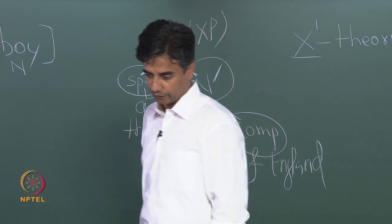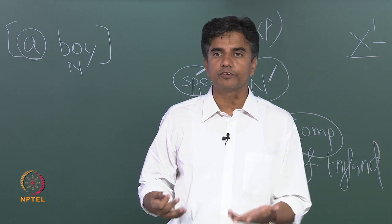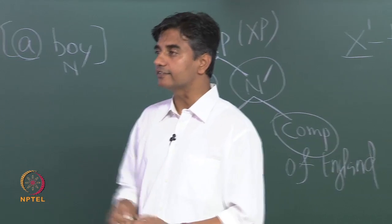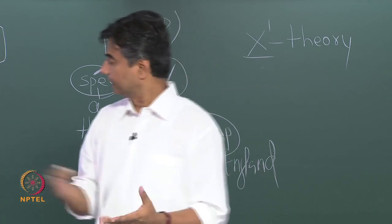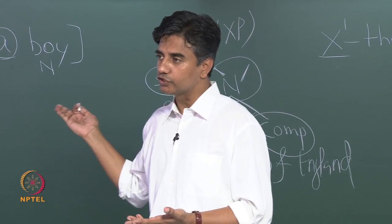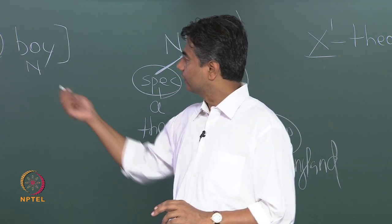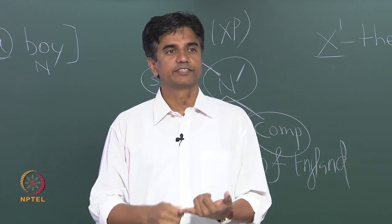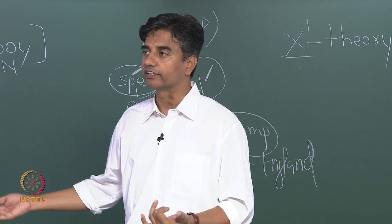In the last example, 'student of physics with long hair' — we have both in this phrase. There is no verb in this whole phrase, therefore it is still a noun phrase, less than a sentence. This is still a noun phrase where we have both a complement and an adjunct: 'of physics' is a complement and 'with long hair' is an adjunct.